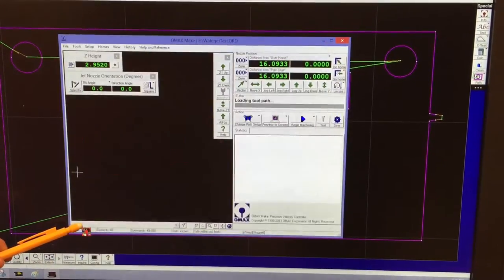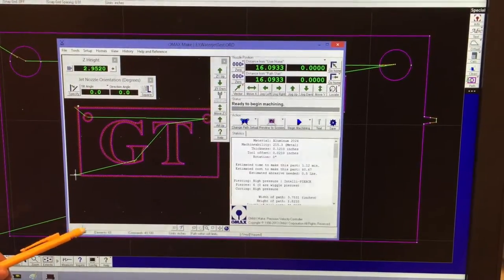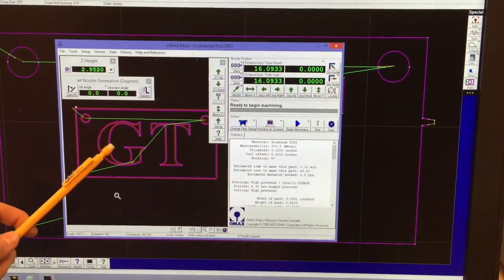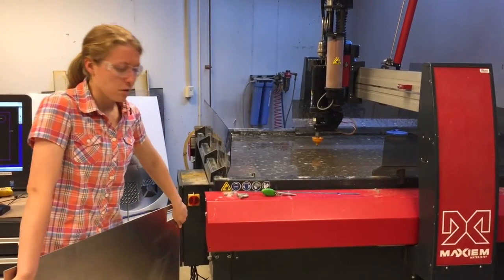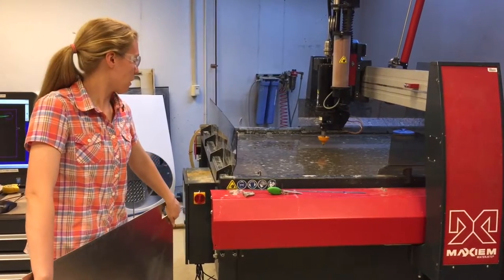Next I'll hit OK. And this opens up a program called Make. So next, we need to load our cutting piece into the water jet.